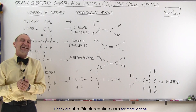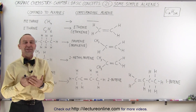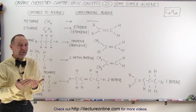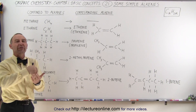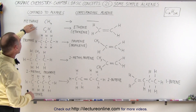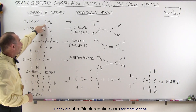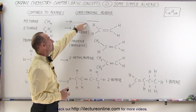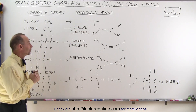Welcome to our lecture. Let's take a look at some simple alkenes and compare them to their equivalent alkanes. Starting with the simplest alkane, methane, which only has one carbon, there is of course no corresponding alkene — you cannot have a double bond with only one carbon.